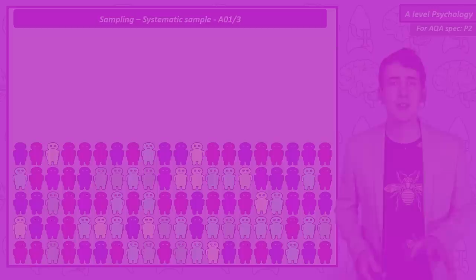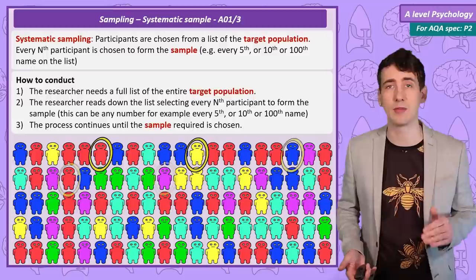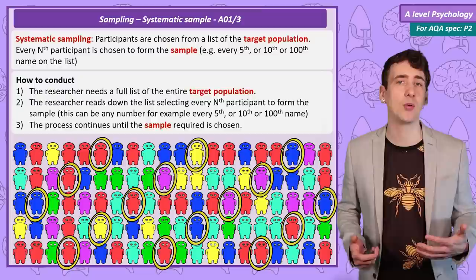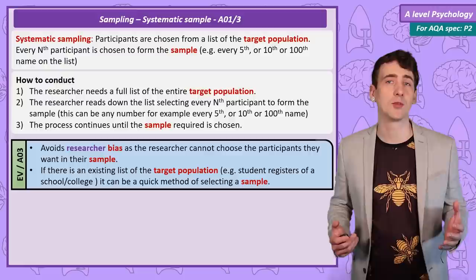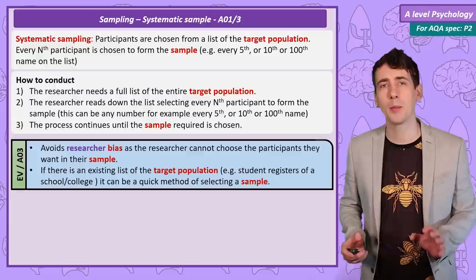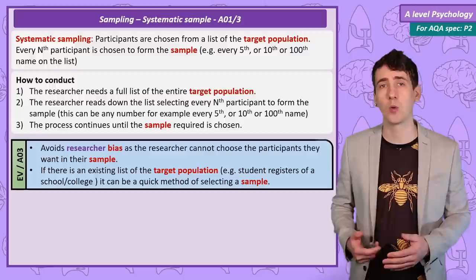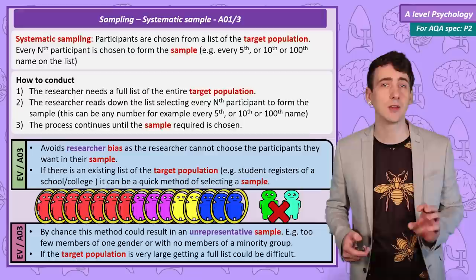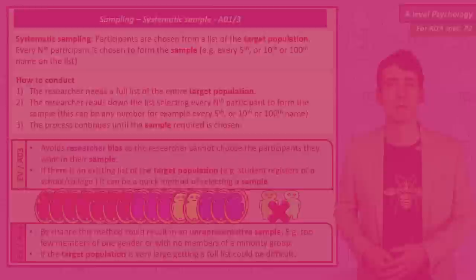Systematic sampling is similar to random — we still need the list of the population, but instead of picking randomly we go down the list and choose every 5th, 10th, or nth person. You can imagine a teacher picking a sample from her class using the register and calling out every third name. This again removes the chance of researcher bias. With a small population and existing lists such as a register, this can be a quick way of getting a sample. It's unlikely but still possible to get an unrepresentative sample, and with large populations it's difficult to get a full list of members.